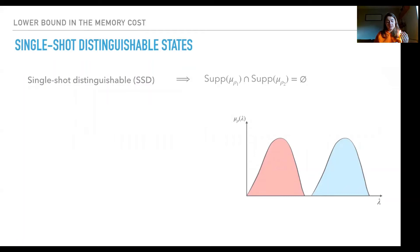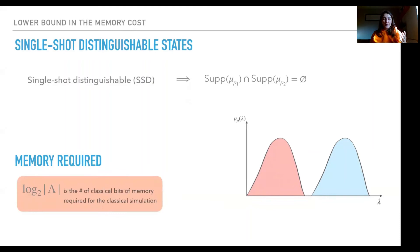Another important concept is single-shot distinguishable states. If two quantum states in the sub-theory can be distinguished in one shot, this means that in the classical version the intersection of the supports of these two states is empty. For example, here I have in red and in blue two probability distributions of two different states, and the intersection of their supports is empty.